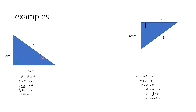Remember, the theorem says the square on the hypotenuse is equal to the sum of the squares on the other two sides. So I'm going to say 3 squared plus 5 squared equals X squared. So 3 squared is 9, and 5 squared is 25. Adding 9 and 25 gives me 34. I'm solving for X, not X squared, so X is equal to the square root of 34, which is 5.83 centimeters.